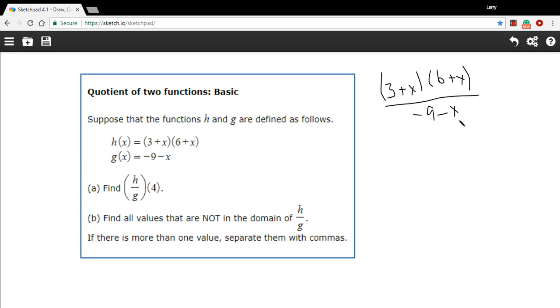Because g, this function here, is in the denominator, it can never equal 0. It's not allowed to be 0 because you can't have a division by 0.